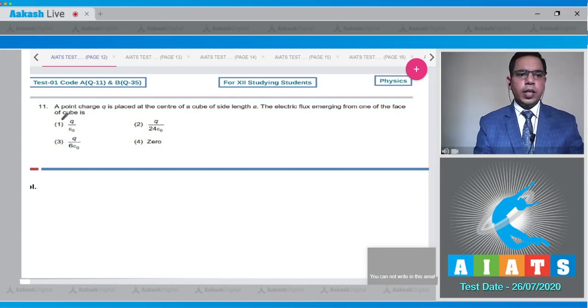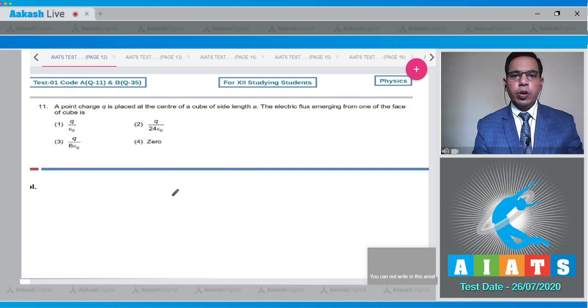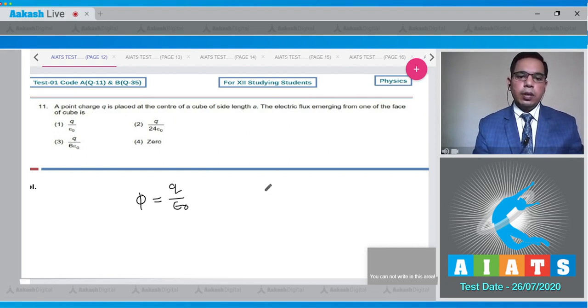Now move to question number 11, which states that a point charge q is placed at the center of a cube of side length a. The electric flux emerging from one face of the cube is? We know that the flux through a cube is equal to q upon epsilon naught because this charge is enclosed within the cube. In the cube there are 6 faces and flux is equally distributed on each face. Flux through each face will be equal to total flux divided by 6, which equals q upon 6 epsilon naught. This is an easy category question and option 3 will be the correct answer.